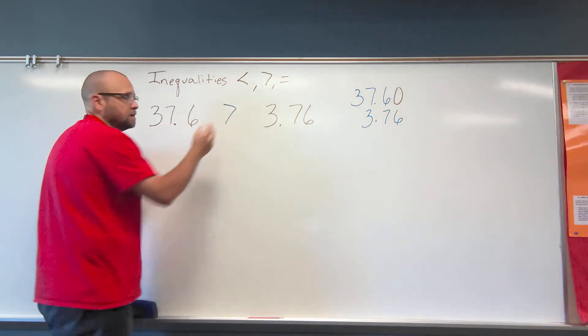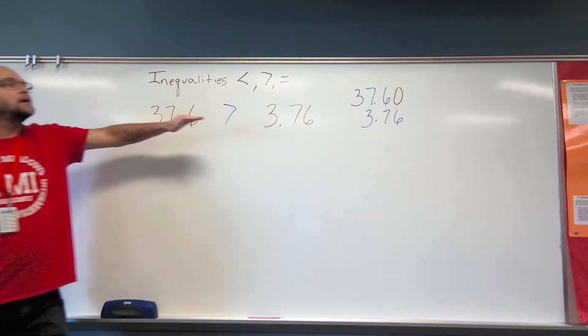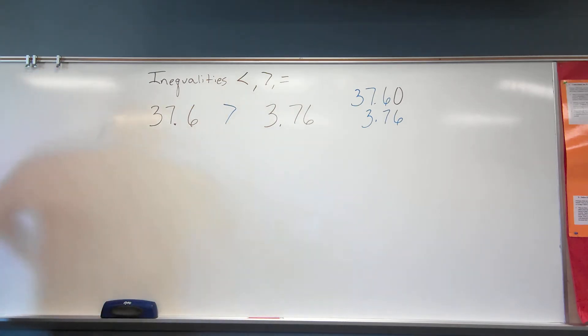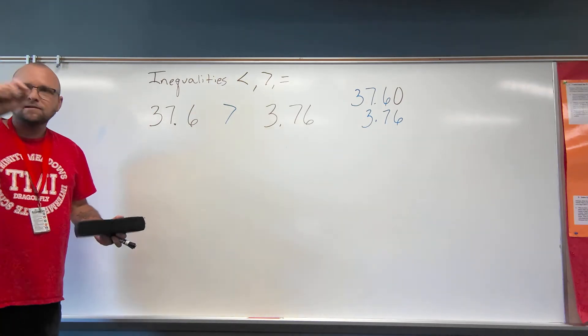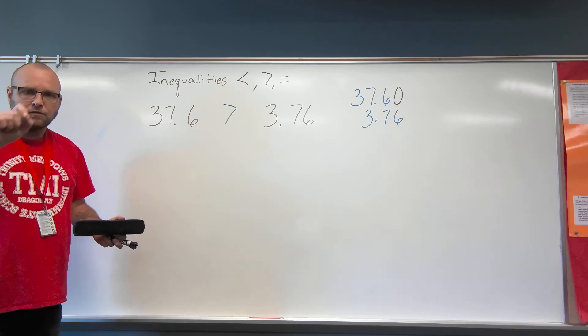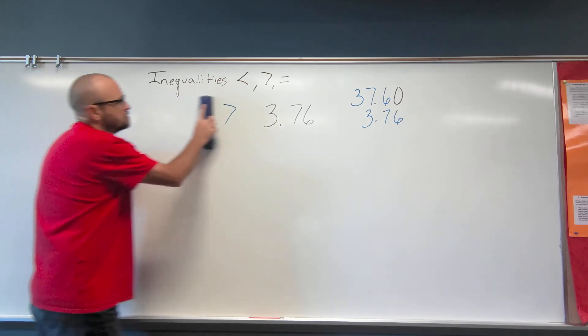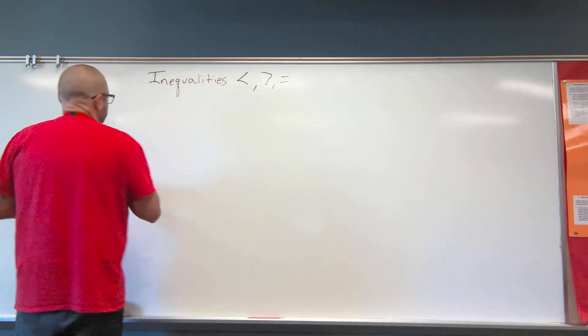So if I were to read this in words like big kids do, I don't say the alligator eats. No. I say 37 and 6 tenths is greater than 3 and 76 hundredths. Let's try and be able to use the words because I may at some time say, hey, write it in words where you'd have to write 37 and 6 tenths is greater than 3 and 76 hundredths. Just because I want you to have to do it that way. Let's take...